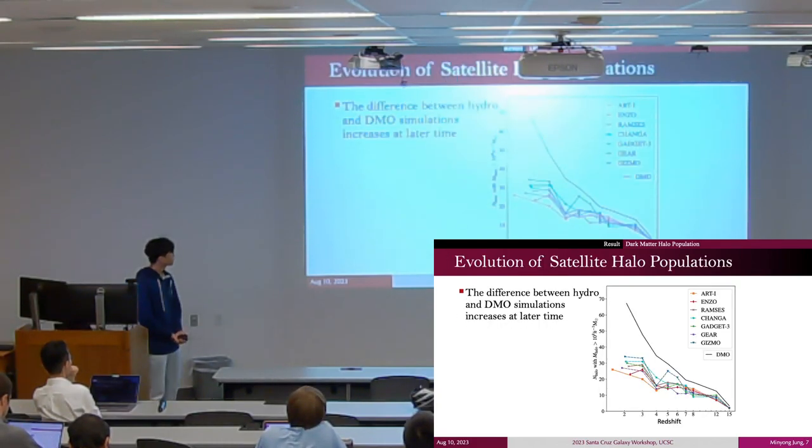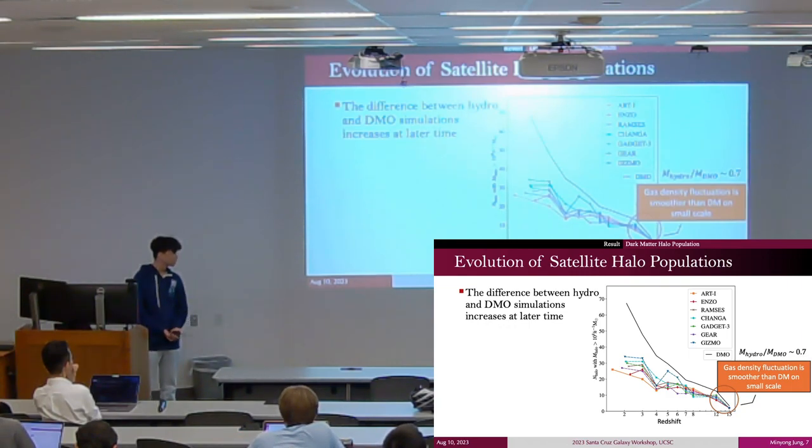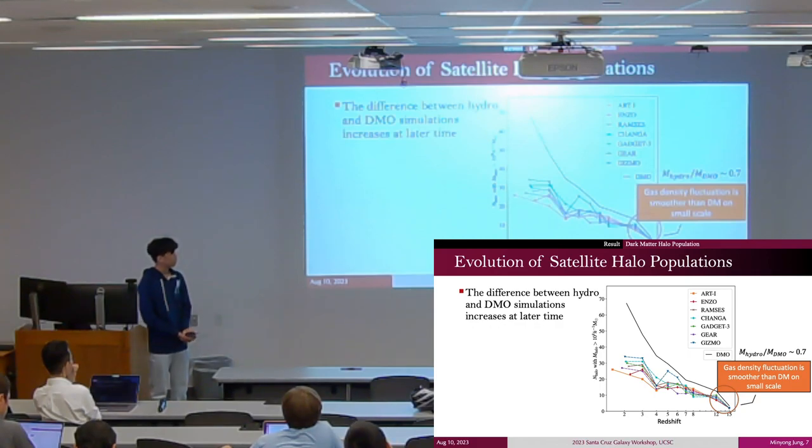Next, we investigate the growth of satellite halo populations over cosmic times. As early as z=15 or 12, the number of satellite halos is much fewer in hydrodynamic simulations.